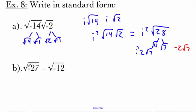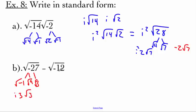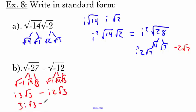For example b, we've got the square root of negative 27 minus the square root of negative 12. Breaking down root of negative 27 using negative 1, 9, and 3: we get i times 3 times root 3, or 3i root 3. Breaking down root of negative 12 using negative 1, 4, and 3: we get i times 2 times root 3, or 2i root 3. Subtracting: 3i root 3 minus 2i root 3 gives i root 3 as the final answer.